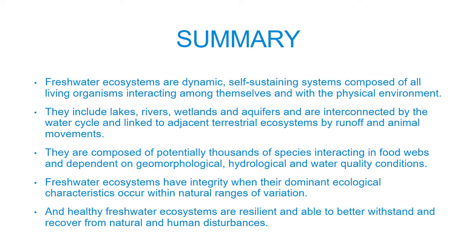To summarize what we've covered in this lecture: freshwater ecosystems are dynamic, self-sustaining systems composed of all living organisms interacting among themselves and with the physical environment. They include lakes, rivers, wetlands, and aquifers, and are interconnected by the water cycle and linked to adjacent terrestrial ecosystems by runoff and animal movements. They're composed of potentially thousands of species interacting in food webs and dependent on geomorphological, hydrological, and water quality conditions. Freshwater ecosystems have integrity when their dominant ecological characteristics occur within natural ranges of variation, and healthy freshwater ecosystems are resilient and able to withstand and recover from natural and human disturbances. Please proceed to the exercises associated with this topic to deepen your knowledge and understanding further.